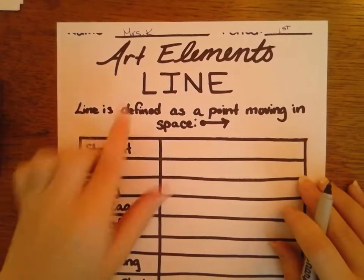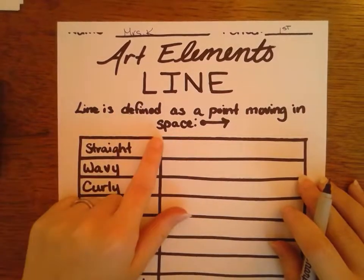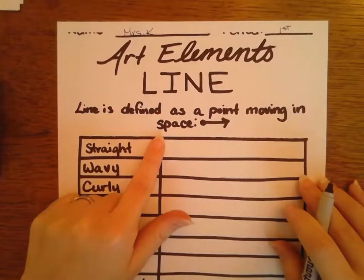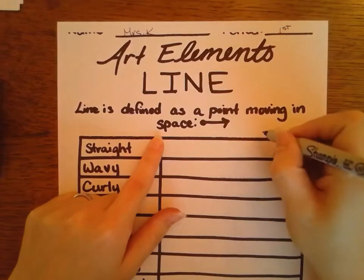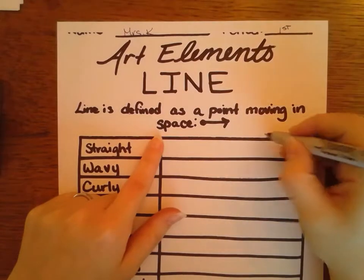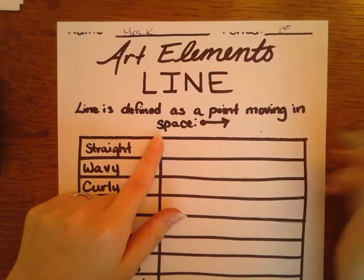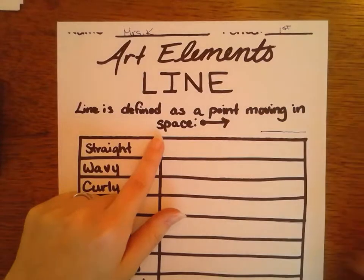Our art element of line is defined as a point moving in space. Basically, if I touch my pencil to paper, I've made a dot. And this dot is now moving to make a line.